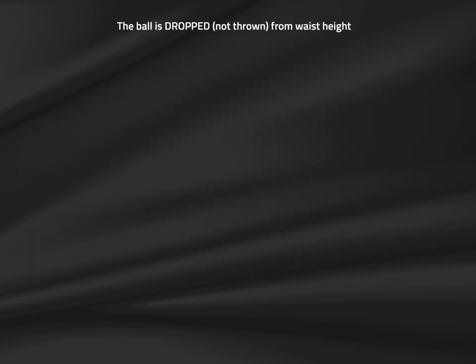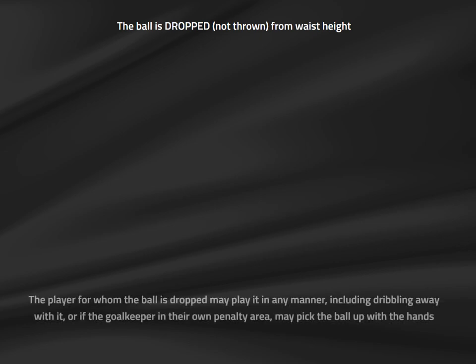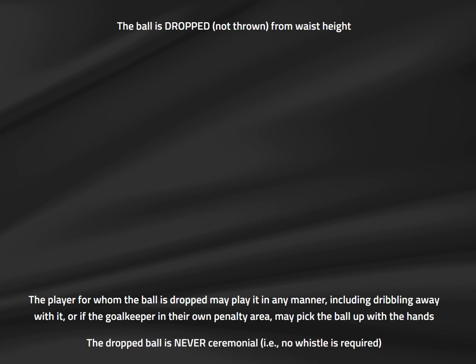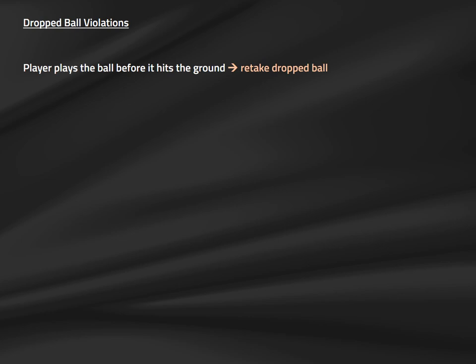The referee should drop the ball from waist height — simply pull your hand away and let it go. The ball is in play the moment it hits the ground, and the player for whom it is dropped may play it directly, including passing, dribbling, or if a goalkeeper in their own penalty area, picking it up with the hands immediately. No warning or whistle is required, so the dropped ball is the only restart that is never ceremonial. The most common violation used to be touching the ball before it hit the ground, requiring a re-drop. With the new single-player protocol, this should no longer happen.